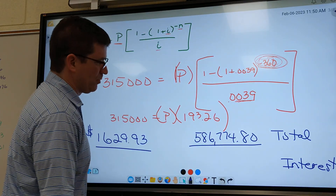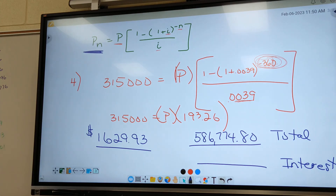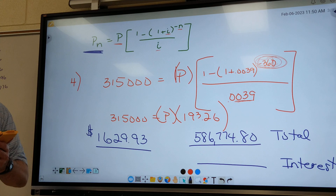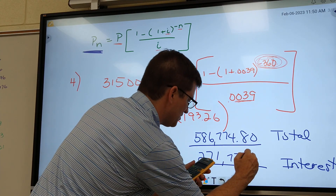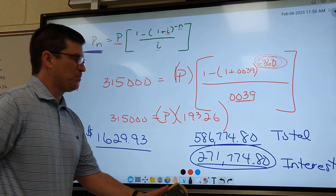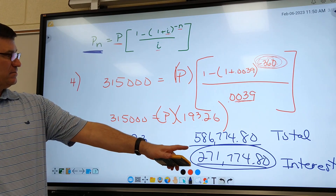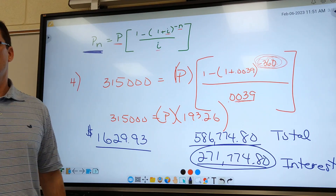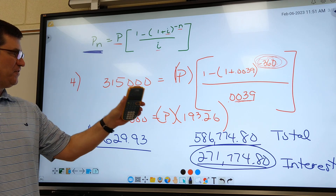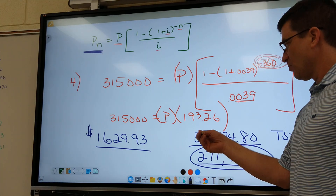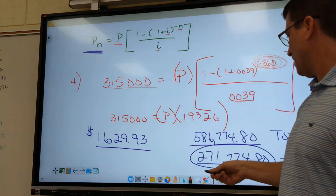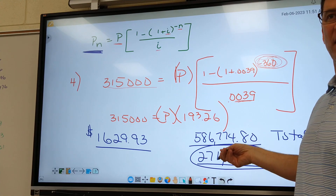Now, how do we figure out how much interest they earned in 30 years? Subtract the cost of the house. I got 271,774 and 80 cents. So you're paying almost as much in interest as the house costs — the house is only 315,000 and you're paying nearly that again in interest. I take the total cost and subtract how much the house cost, and what's left is the interest you pay the bank.